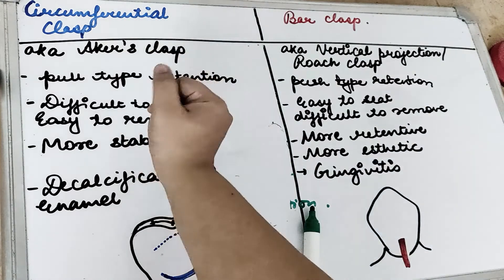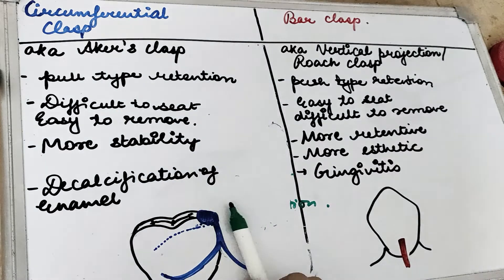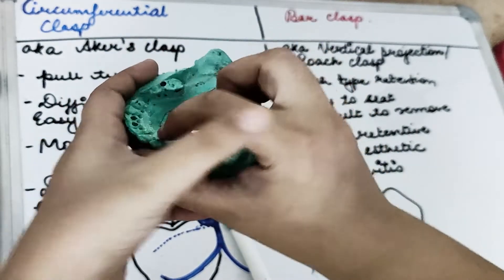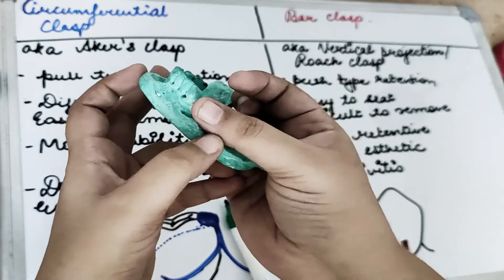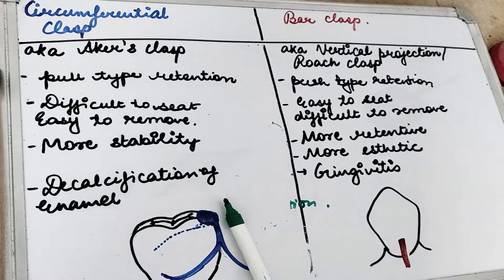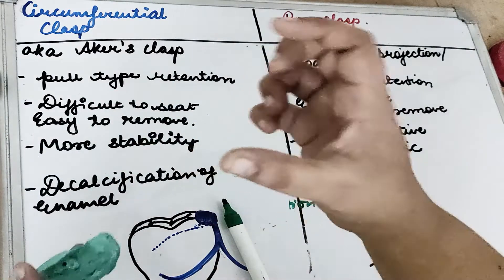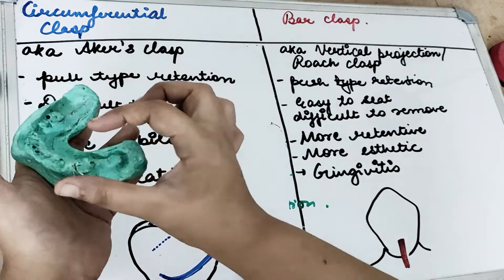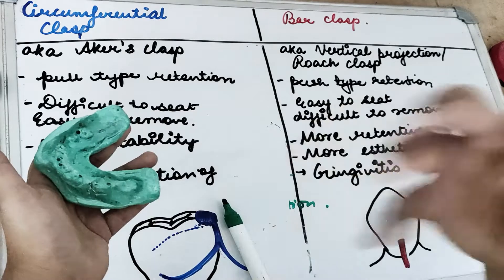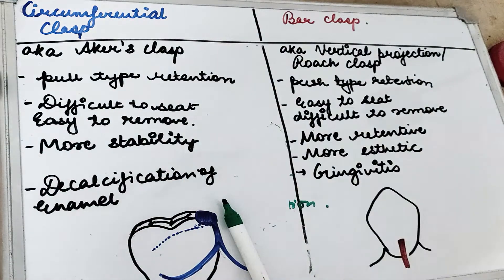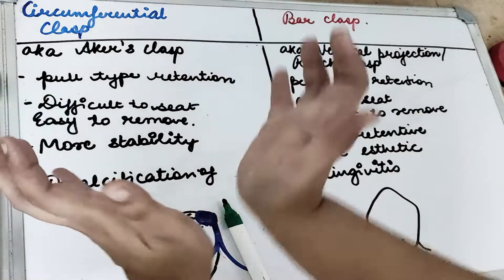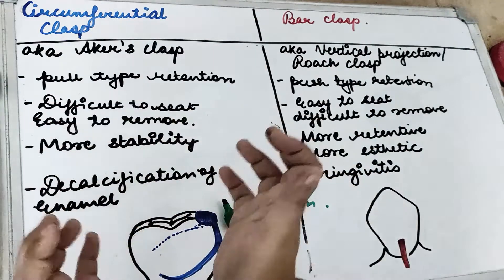The circumferential clasp is also known as the akers clasp. This clasp is going to circumference the tooth — the retentive arm goes down and there is the reciprocating part. When we are trying to seat this circumferential clasp, it is difficult to seat. But when we are trying to remove the RPD, it is easy to remove if it has a circumferential clasp. So this clasp provides more stability because it is encircling the whole tooth.